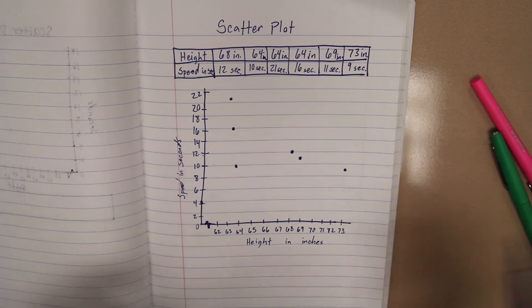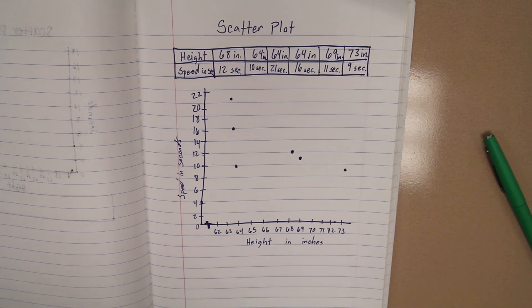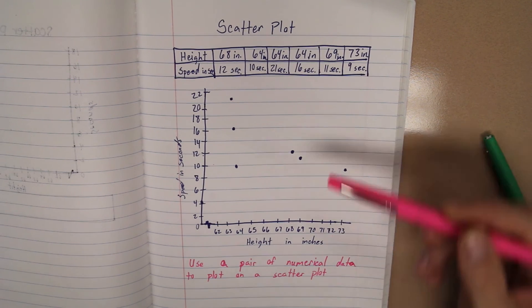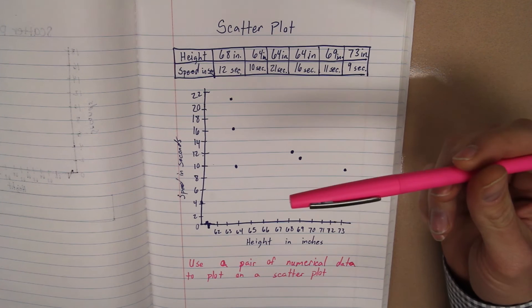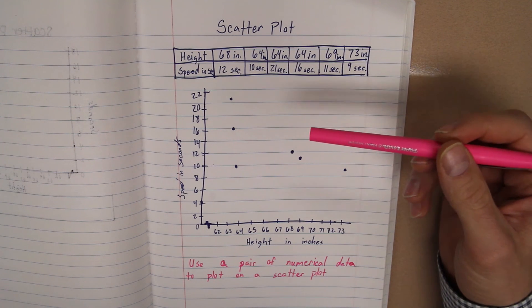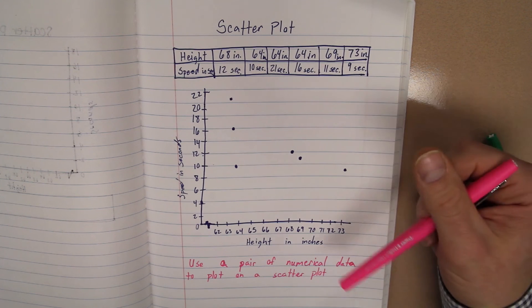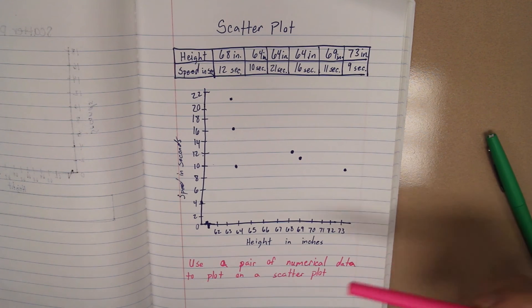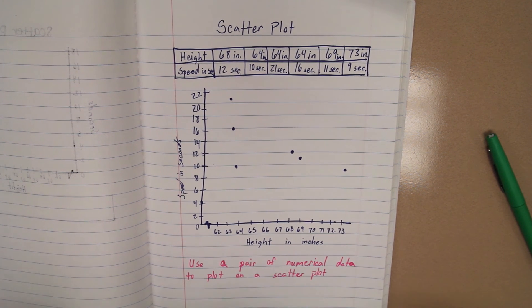So a scatter plot is taking information. It's two sets of numerical data, or a pair of numerical data, and plotting it onto a chart, or onto a graph, a coordinate plane. So what we're going to do is we're going to write down at the bottom. We're going to write: use a pair of numerical data to plot a scatter plot. So whereas on our categorical data, we used a question that had the answer of a word, and we plotted that on our two categorical, which was the frequency table and the dot plot. Then we used our numerical, which we used a question with an answer being a number. So we were able to plot those. And with a scatter plot, we're taking two numbers, a pair, and seeing how they relate to each other on a scatter plot. So that's basically it.